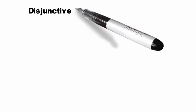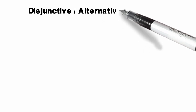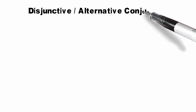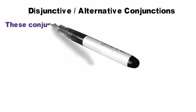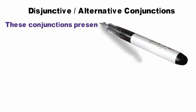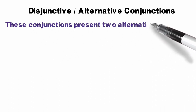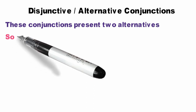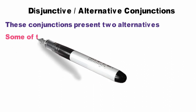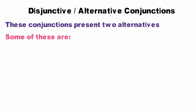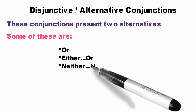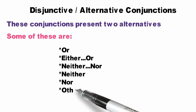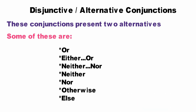Next is disjunctive or alternative conjunctions. As the name suggests, these conjunctions present us a choice — always alternatives. Sometimes it can be a choice as well. Some of these are: or, either...or, neither...nor, neither, nor, otherwise, and else.